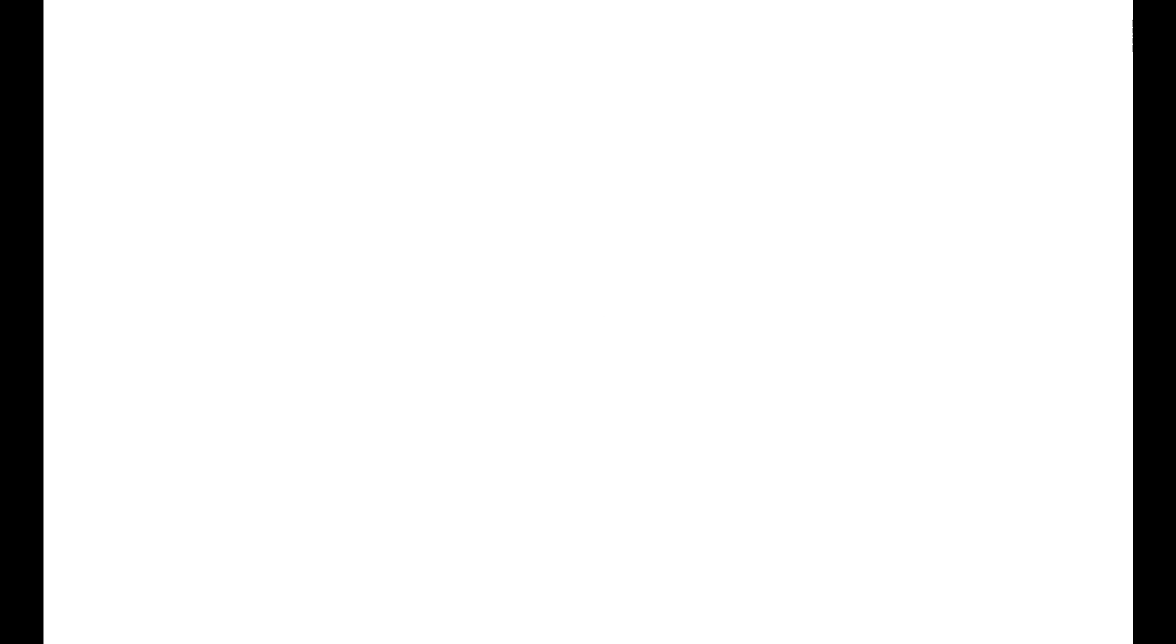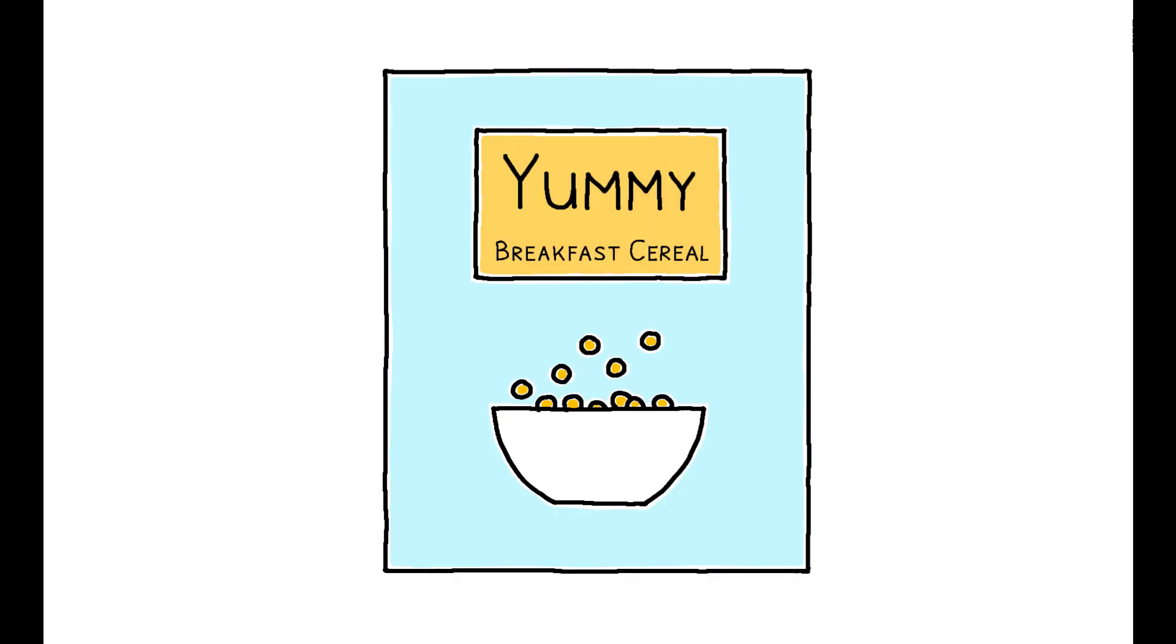Thus, front-of-package labels can be an effective way to improve diet and combat obesity. How do they compare to other policy tools? In particular, sugar taxes, which levy a per-ounce tax on any product with added sugar, are one of the most widely used alternative policies.